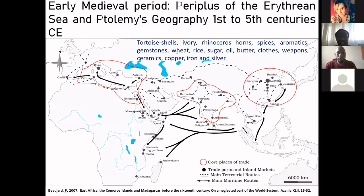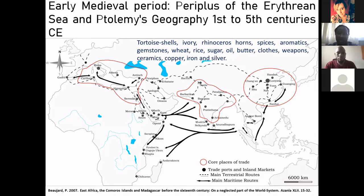Trading products being exchanged included tortoiseshell, iron, rhinoceros horns, spices, aromatics, gemstones, wheat, rice, sugar, oil, butter, and ceramics. There is also some commerce related to slavery, which means that the slave trade is not something that started recently or as it is most known — that slavery or the trade of slaves was something started with Europeans. No, it was done even in very earlier times, a very long time ago.